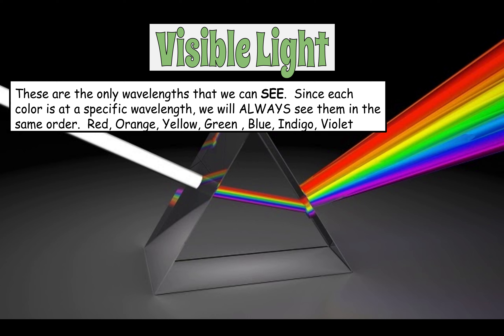Since each color is at a specific wavelength, we'll always see them in the same order. So if you take white light, like you can see here, and shine it through a prism, the white light will refract — or bend — when it enters the prism. When it bends, it separates that light into different wavelengths, and the wavelengths become the colors that you see. When it comes out of the prism, it refracts again. Purple has the shortest wavelength, so it will always bend the most and you will always see it last, whereas red has the longest wavelength, so you'll always see it first.